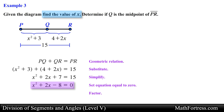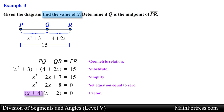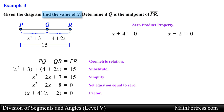Next we check if the quadratic expression is factorable using the factors of the constant term — in this case 4 and negative 2 — to set up two binomials: the quantity (x plus 4) times the quantity (x minus 2). Using the zero product property, we set each factor equal to 0 and solve for x, obtaining x equals negative 4 and x equals positive 2.